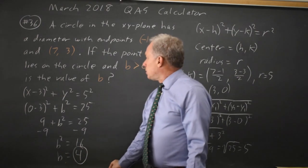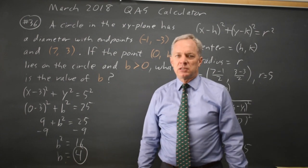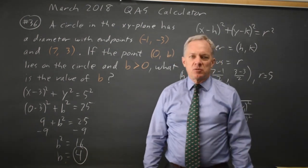So the y-coordinate of the point 0b will be 4.